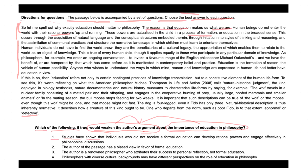The first choice says: studies have shown that individuals who did not receive a formal education can develop rational powers and engage effectively in philosophical discussions. Looking at this option, it can be called a kind of criticism and a weakening of the author's argument about the importance of education in philosophy.